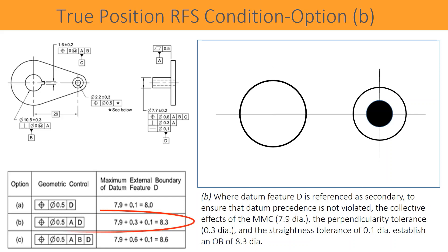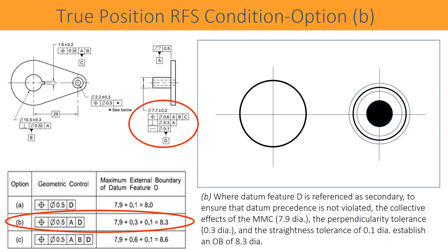Now let us find the boundary size when datum feature D is referenced as secondary datum. The MMC condition of datum feature D is 7.9 millimeters. The orientation control — perpendicularity 0.3 millimeters — is added to the MMC size 7.9 millimeters and straightness value 0.1 millimeters. The total is 8.3 millimeters. To summarize, the collective effects of MMC 7.9 diameter, perpendicularity tolerance 0.3 diameter, and straightness tolerance 0.1 diameter establish an outside boundary of 8.3 diameter.